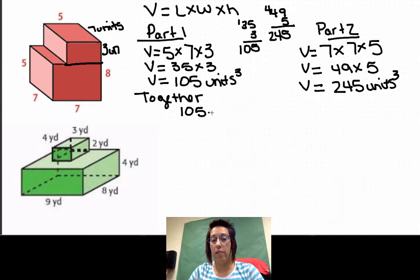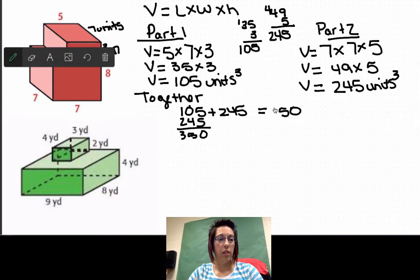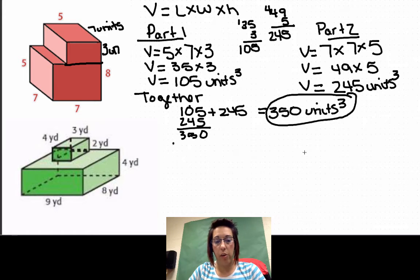So 105 plus 245 equals 350. Let's get an eraser and make that look like I would expect your paper to look. Let's go ahead and set this bottom one up.